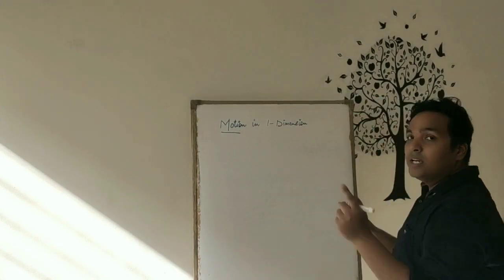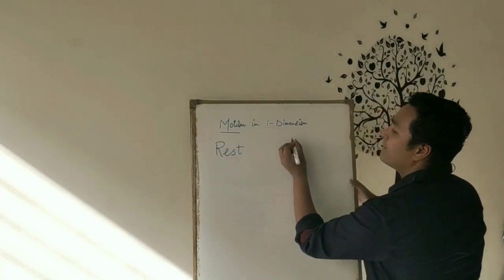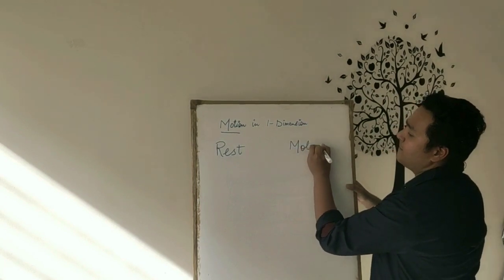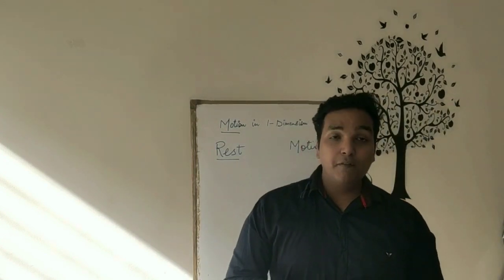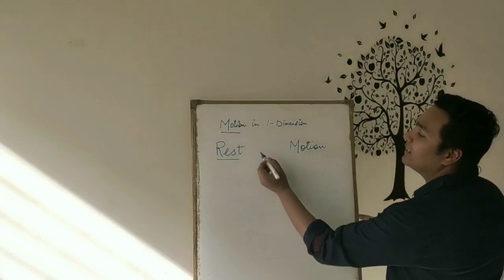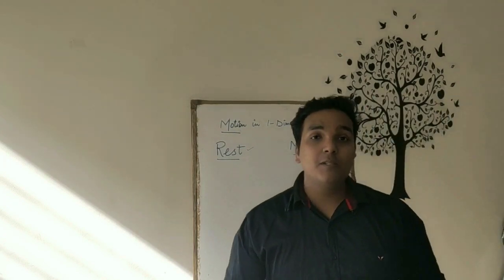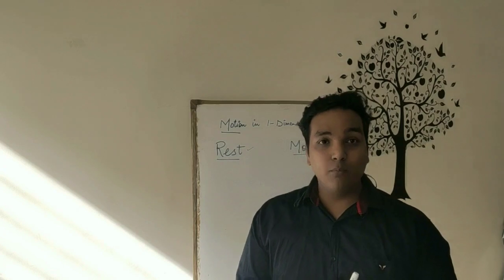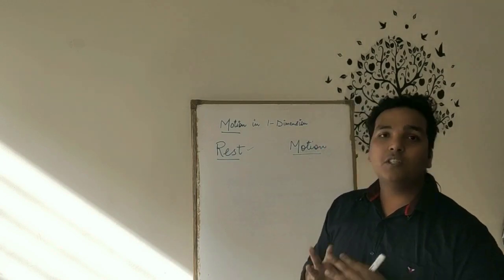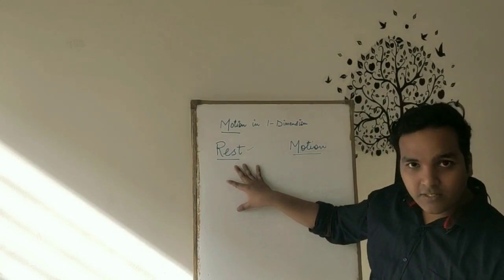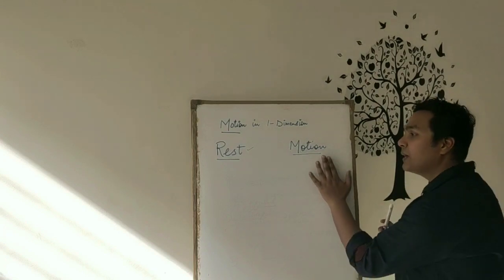First is motion. There are basically two terms: rest and motion. When a body does not change its position with respect to its surroundings, it is termed as rest. But when a body changes its position with respect to its surroundings, it is termed as motion.